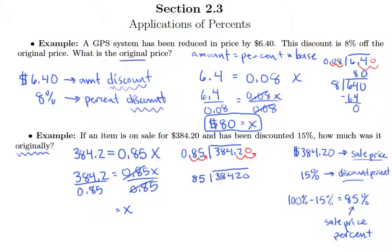Now 85 does not go into 3, it does not go into 8. It goes into 384 how many times? I'm going to say 4 times. So 4 times 5 is 20, and 4 times 8 is 32, plus 2 is 34. And so we have a remainder of 44.